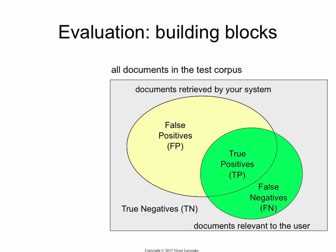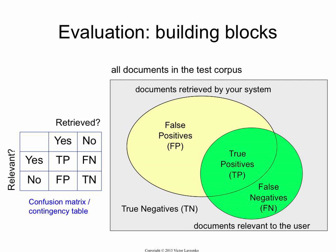The intersection is the true positives — the documents that are relevant to the user, relevant to the information you need, and your system also found them. These are your accurately retrieved documents. You also make two types of errors: false positives, which are documents you retrieved that you shouldn't have — they're non-relevant but your system included them. False negatives are relevant documents that your system missed and didn't return to the user. True negatives are documents that are not relevant and your system hasn't retrieved them.